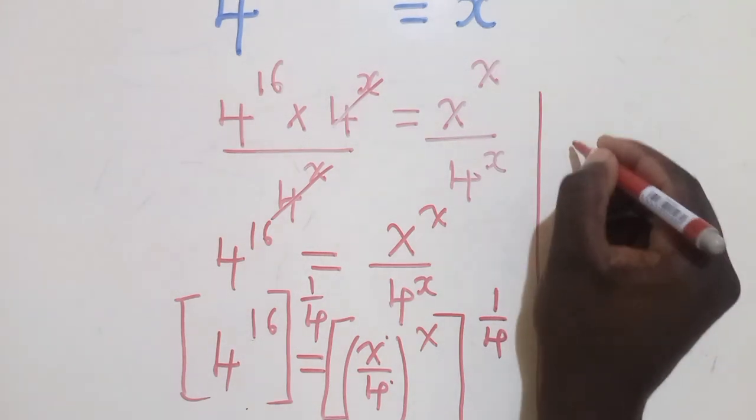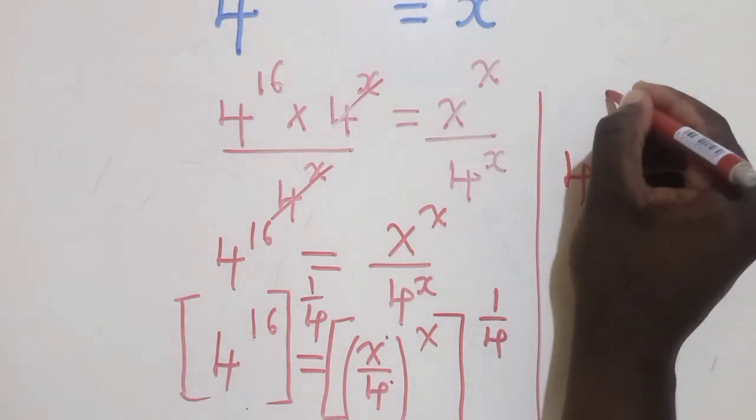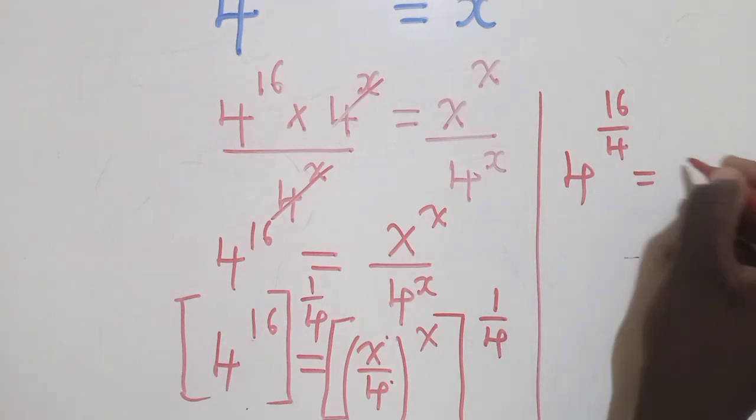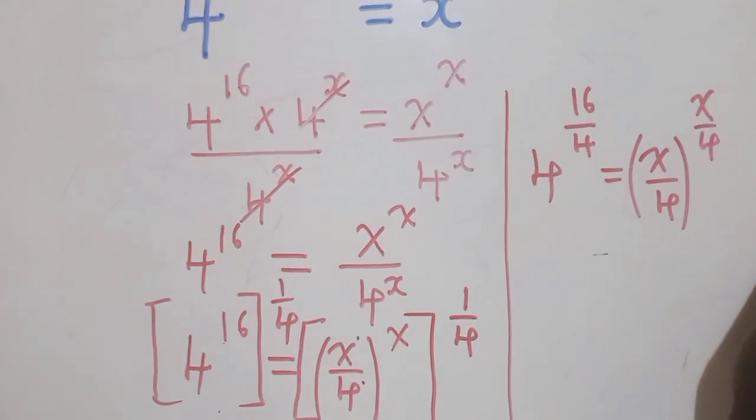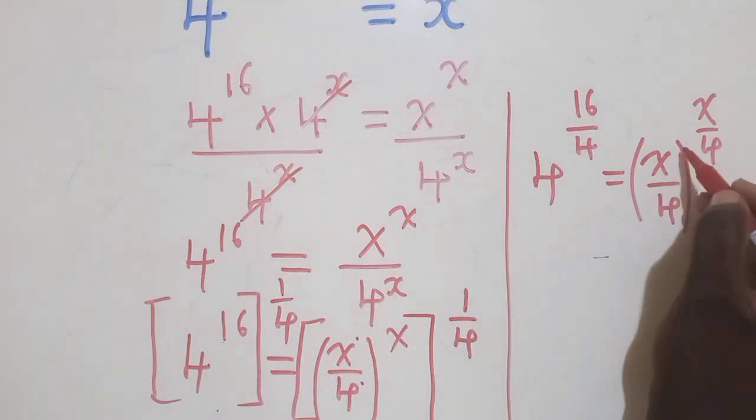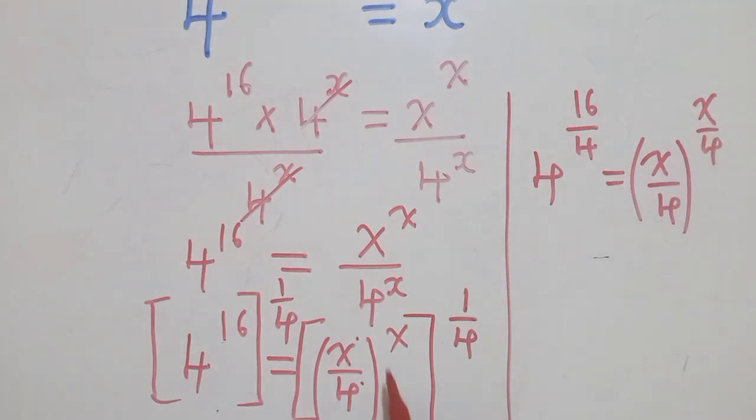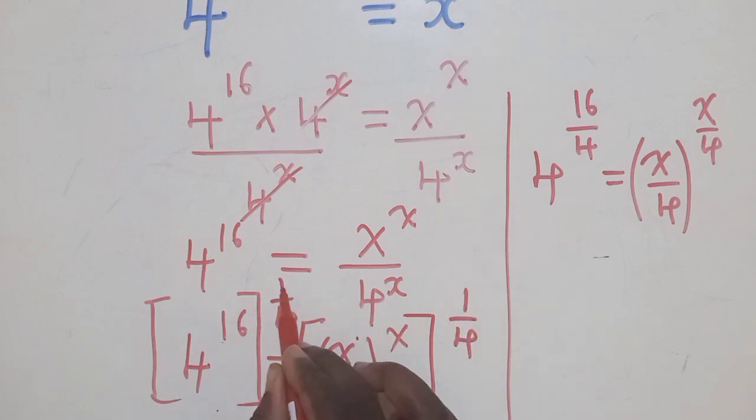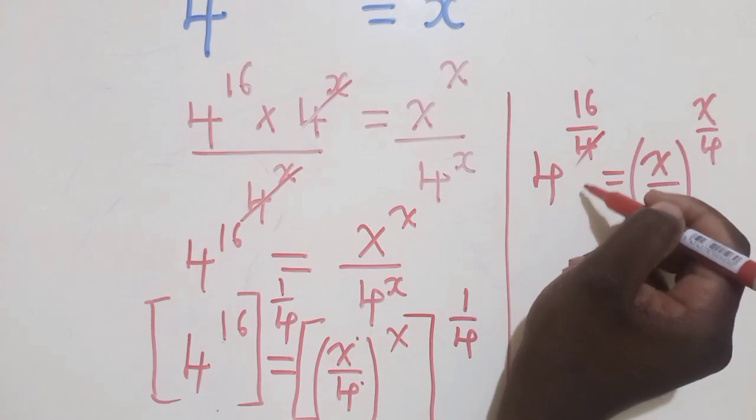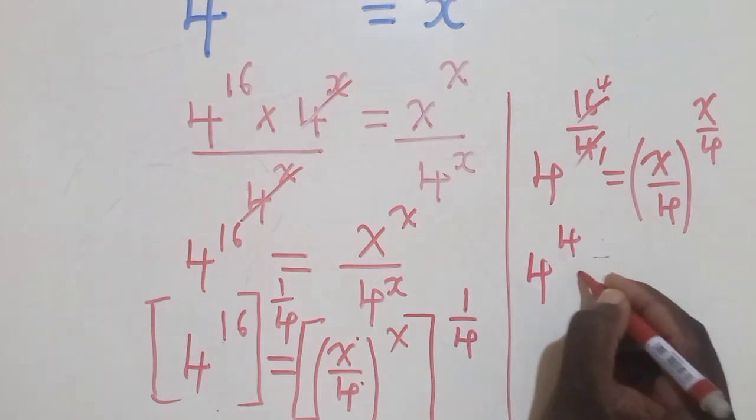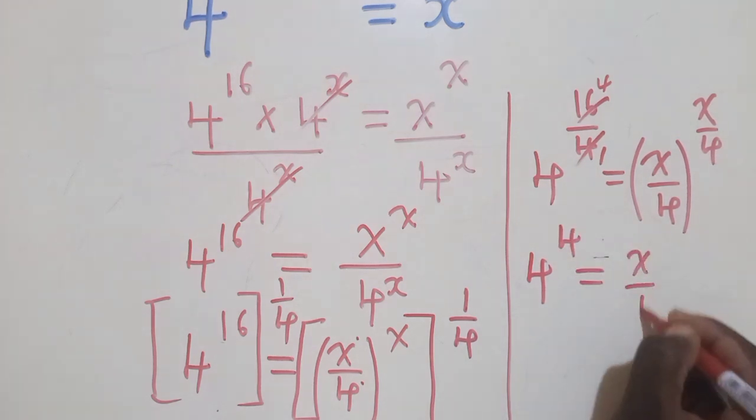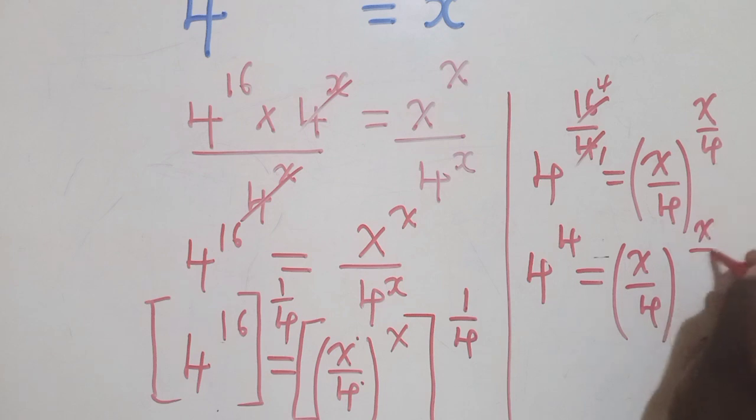All these things will give us something that will look like this. Let me show you the other side: it will be 4^(16/4) is equal to (x/4)^(x/4). This by this will give us what we have here - it being a fraction multiplied by x. So 4 into 4, 1 into 16, we shall have 4^4 which is equal to (x/4)^(x/4).